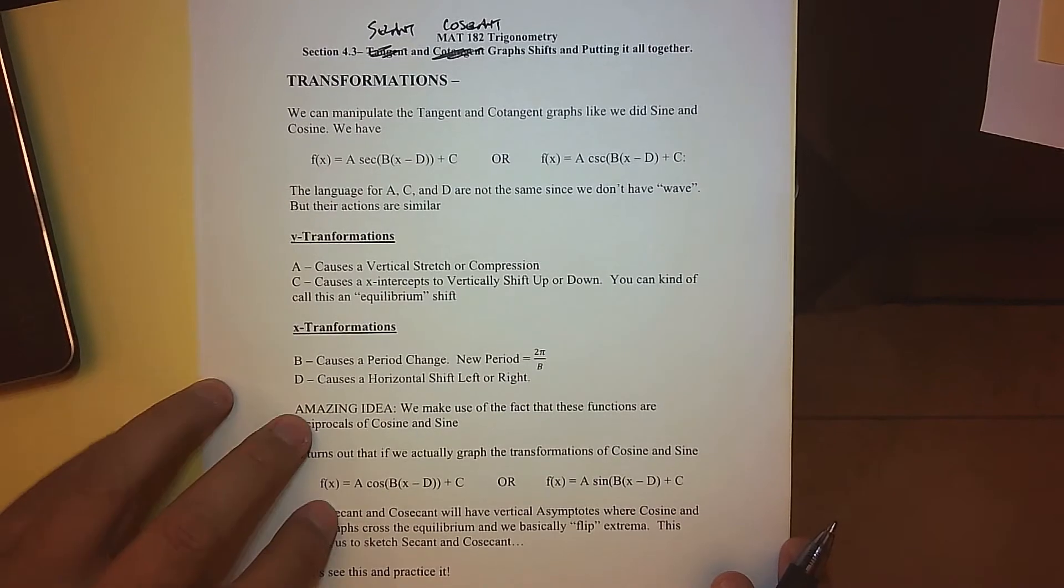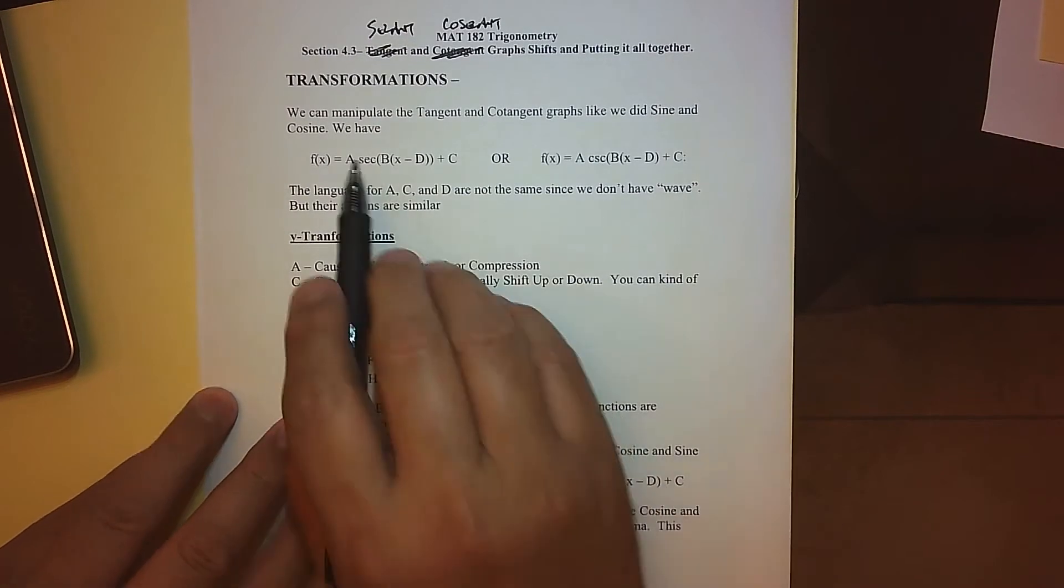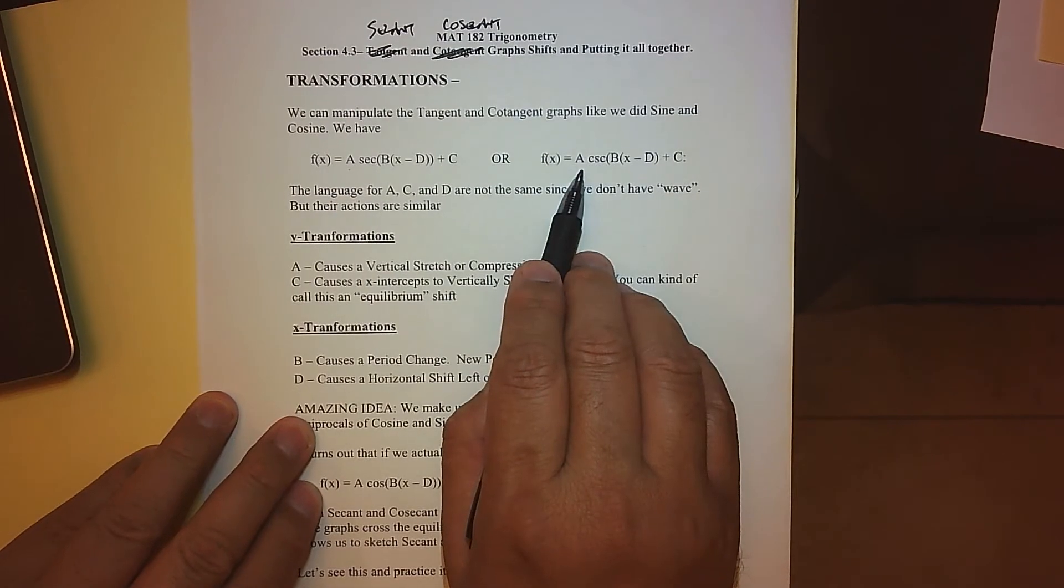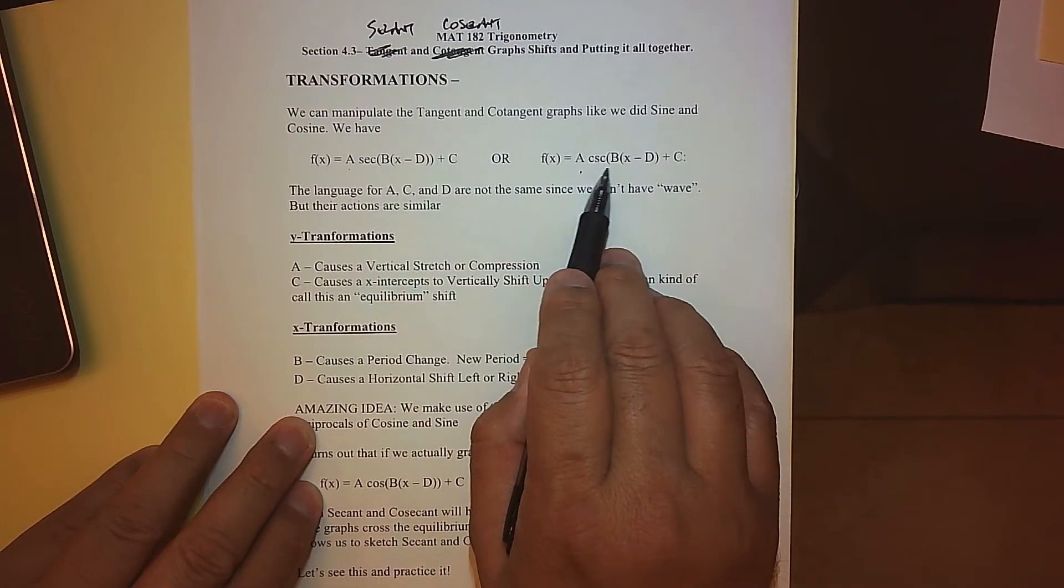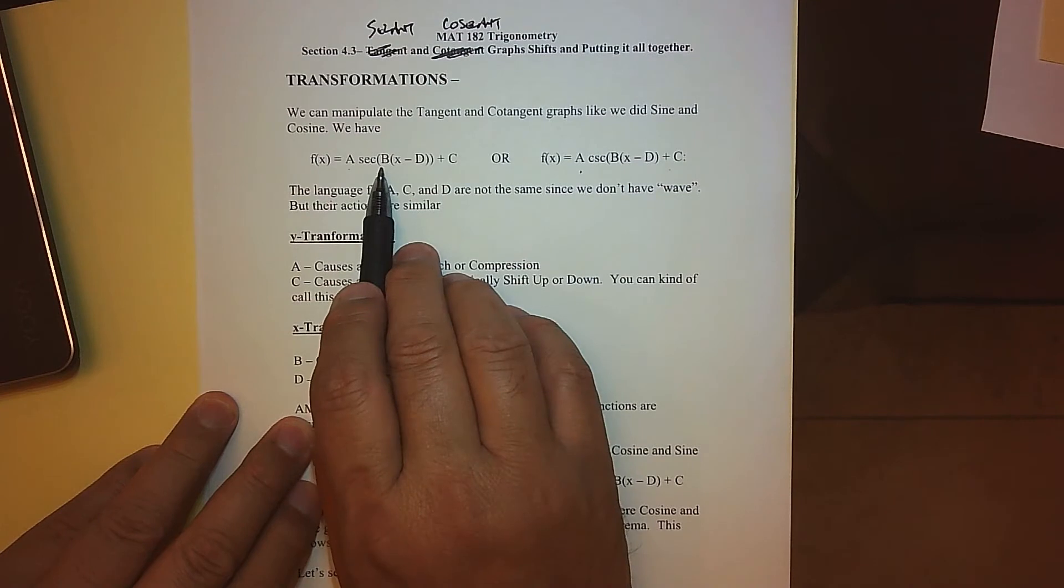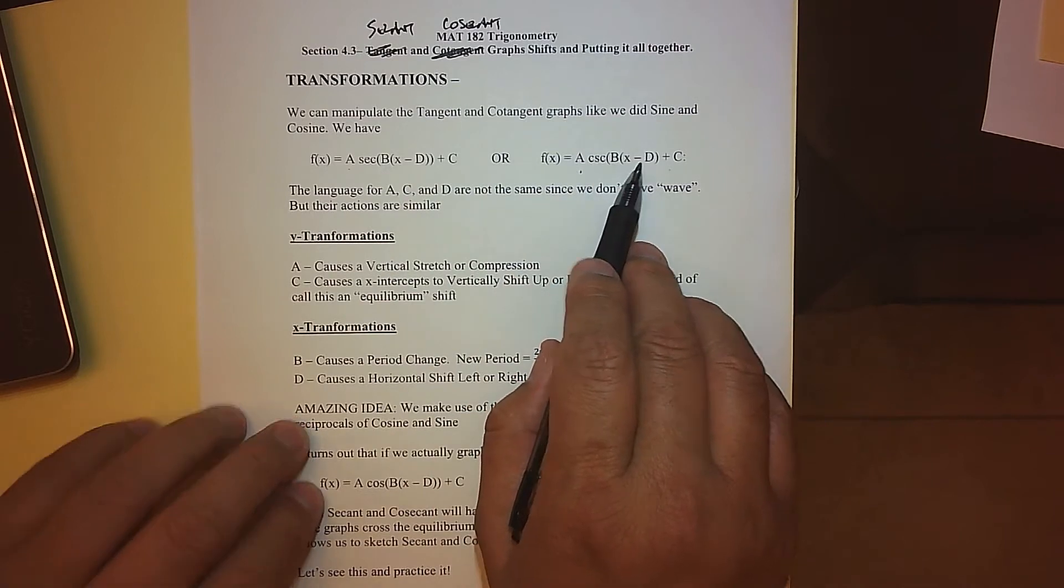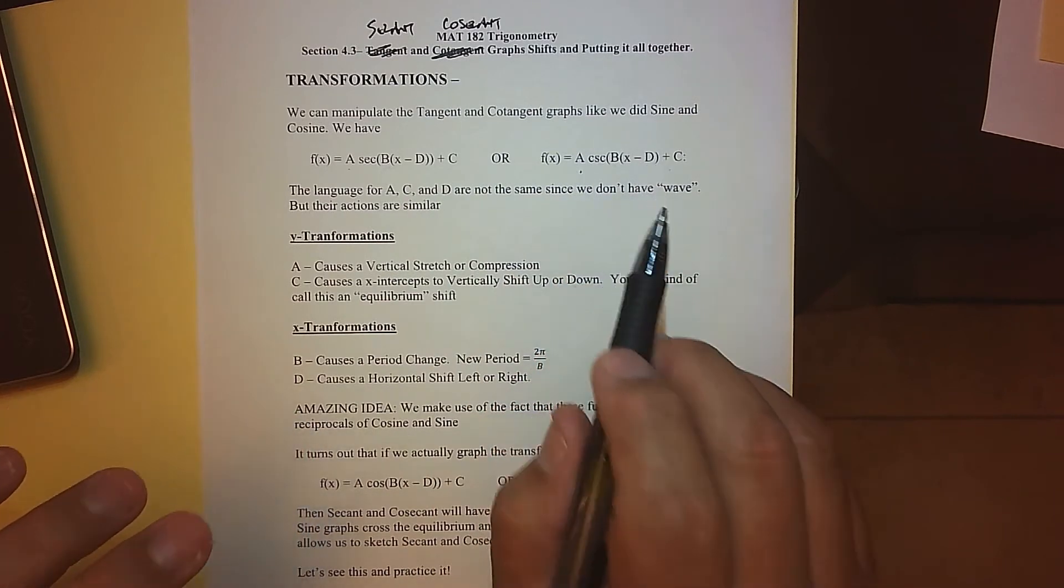We're going to look at manipulating them, and again the big four is: we're going to multiply the secant or cosecant by something, we're going to add the cosecant and secant by something, we're going to multiply my inputs by something, or we're going to add or subtract my inputs from something.